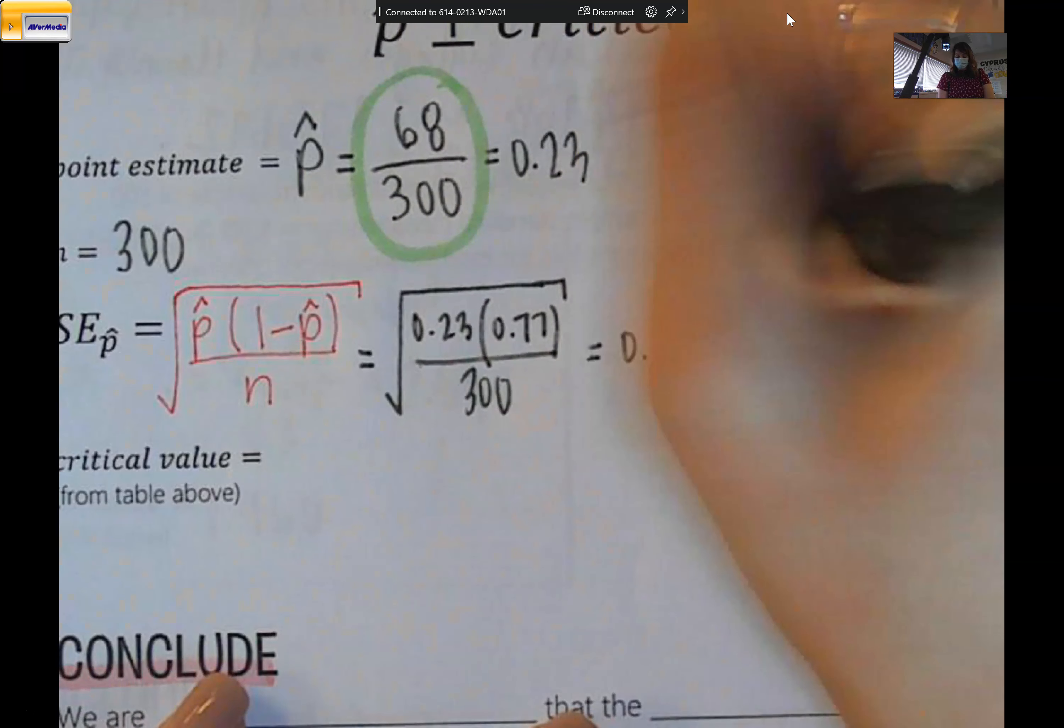Then lastly, we just need our critical value from the table. So we're at 90% confidence. That's 1.645.